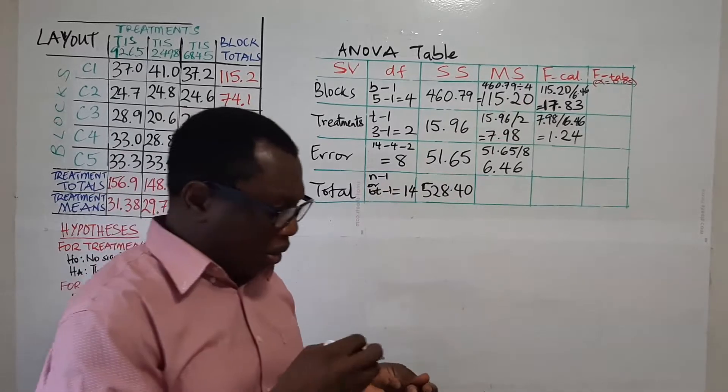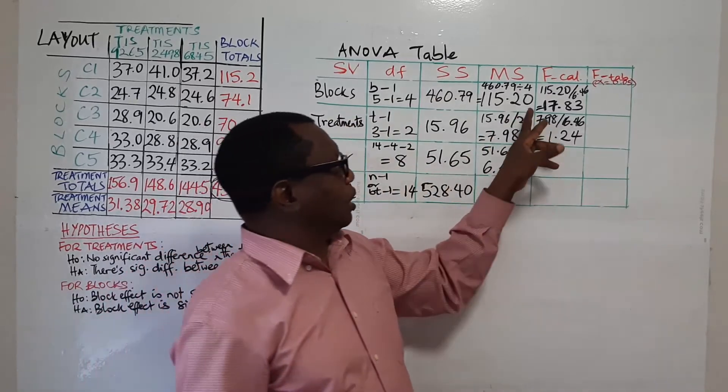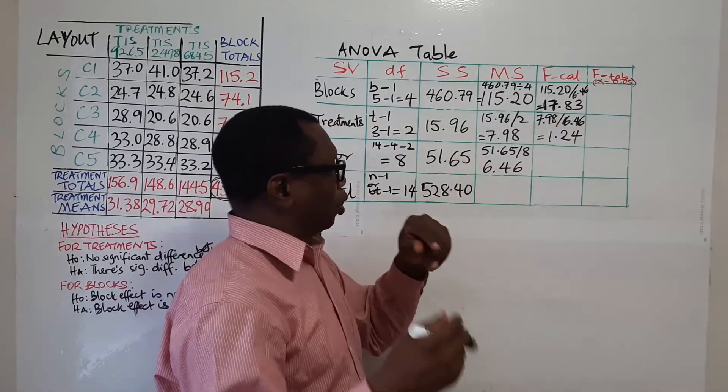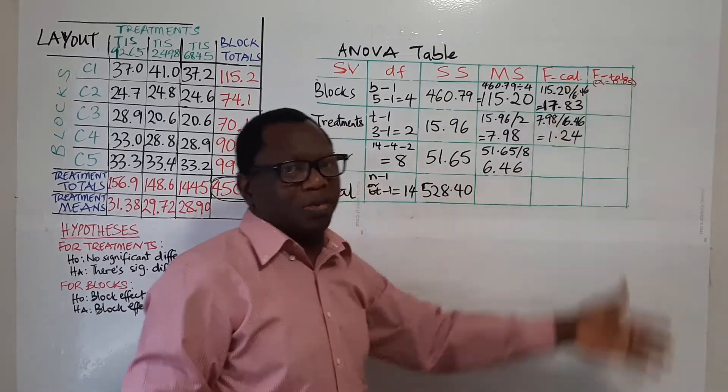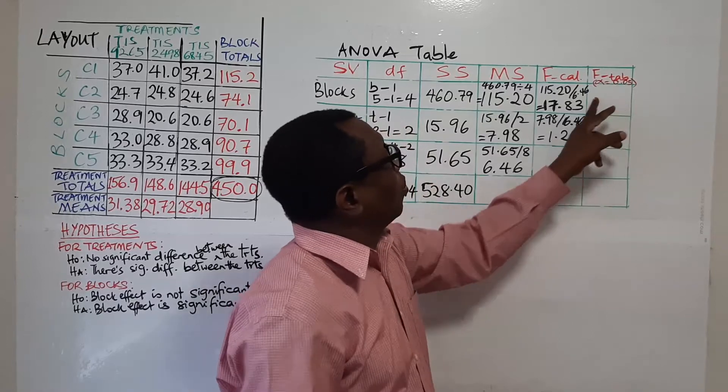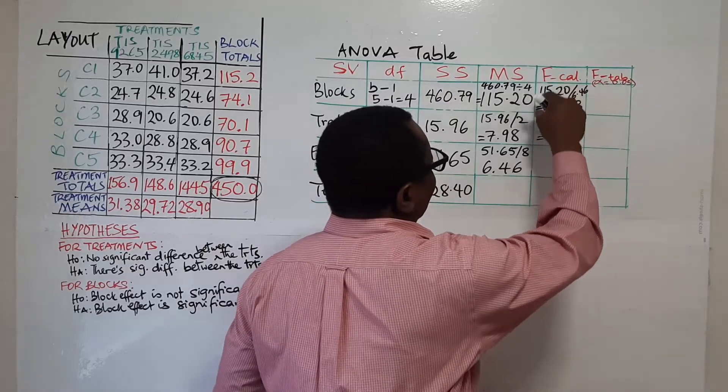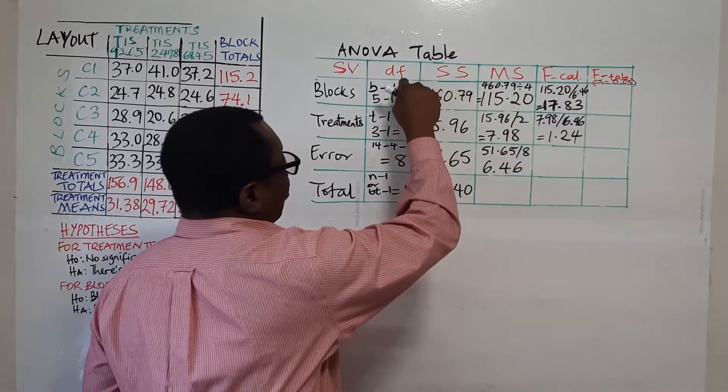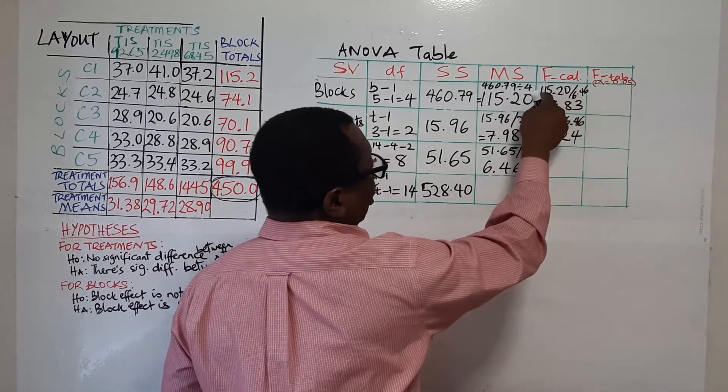So as we explained under the CRD, you will now take your statistical table and look at the degrees of freedom you will use to look at the F tabulated. I have said usually we use 0.05 level of significance. Now, for blocks, if you want to get the F tabulated for blocks, because in doing the F calculated, you use the mean squares for blocks and for error. In the same way, when you want to get this, you will need degrees of freedom for blocks and for error, because those are the two things you evaluated to get your F cal.